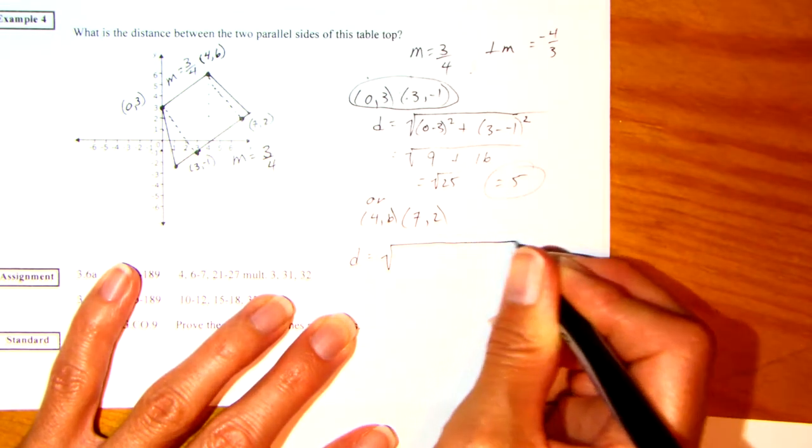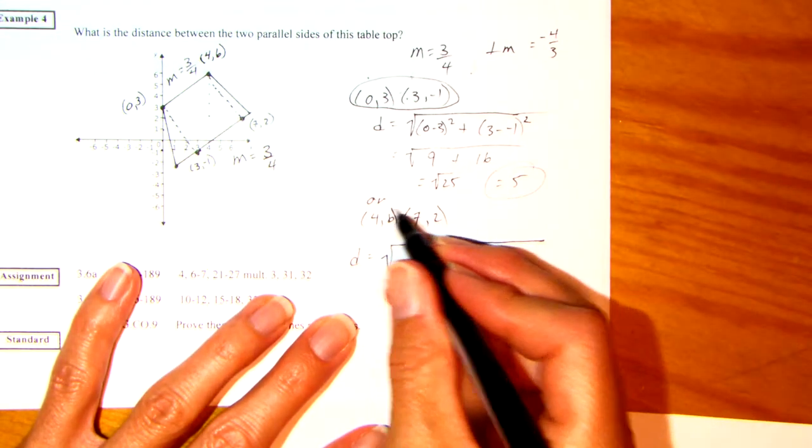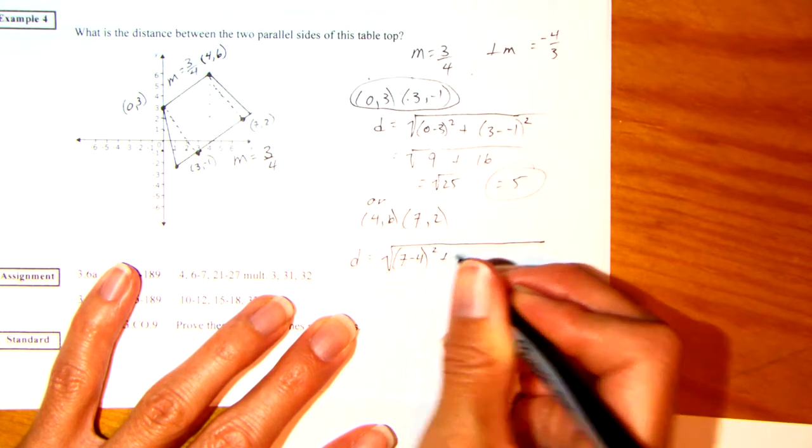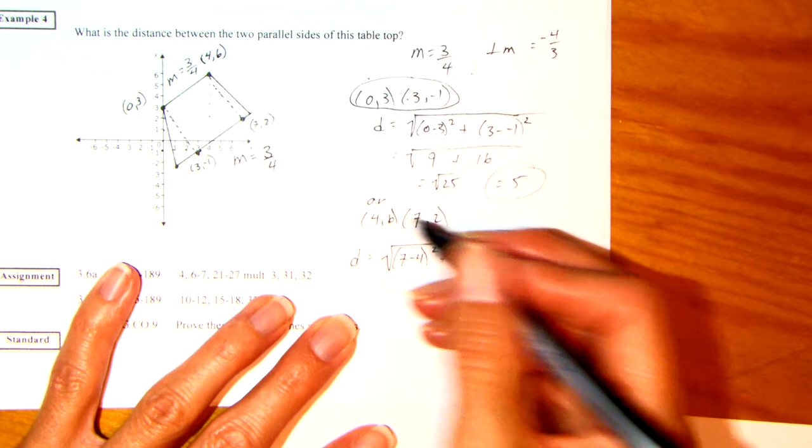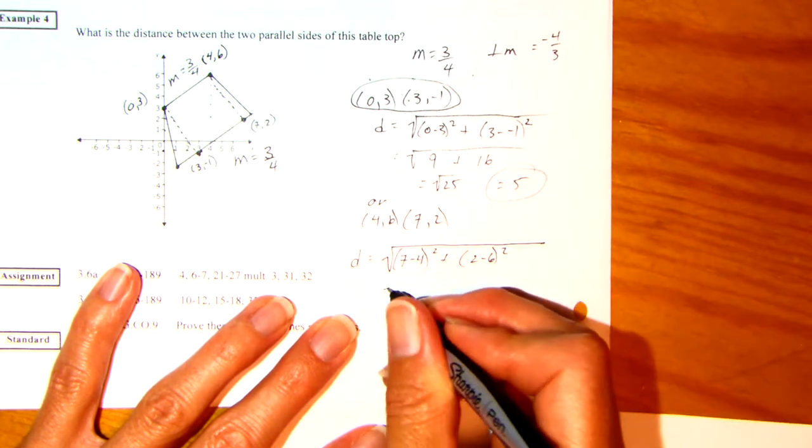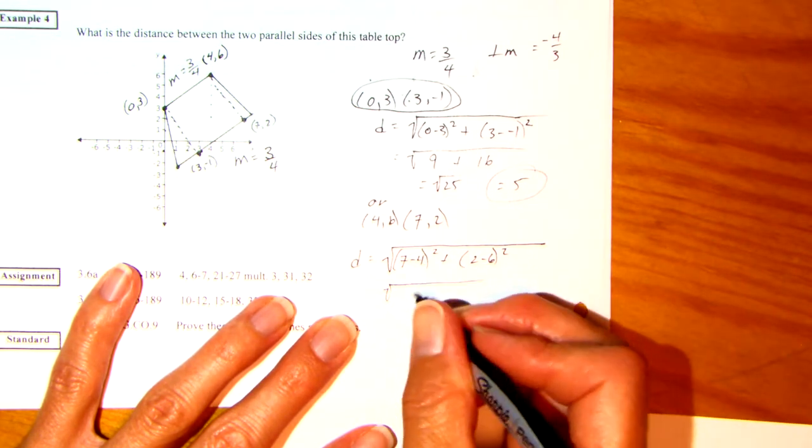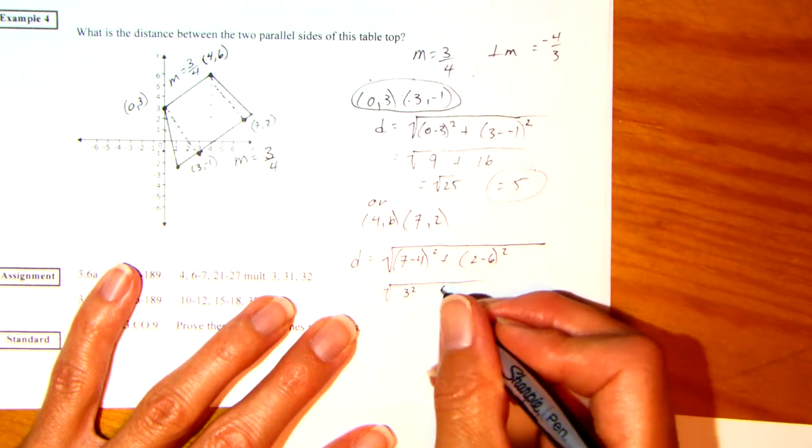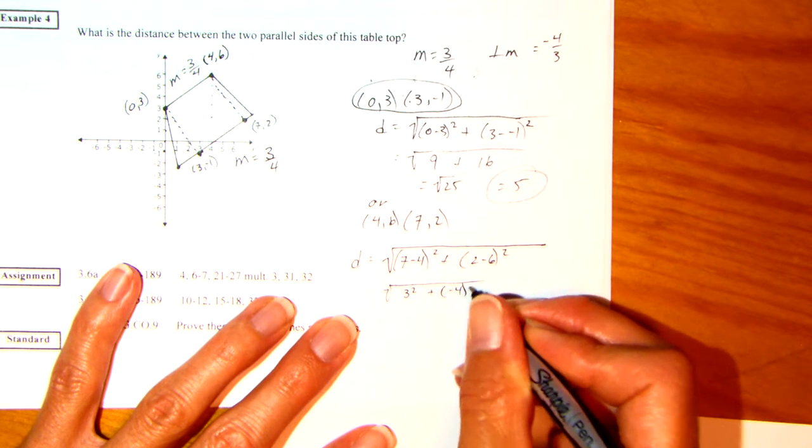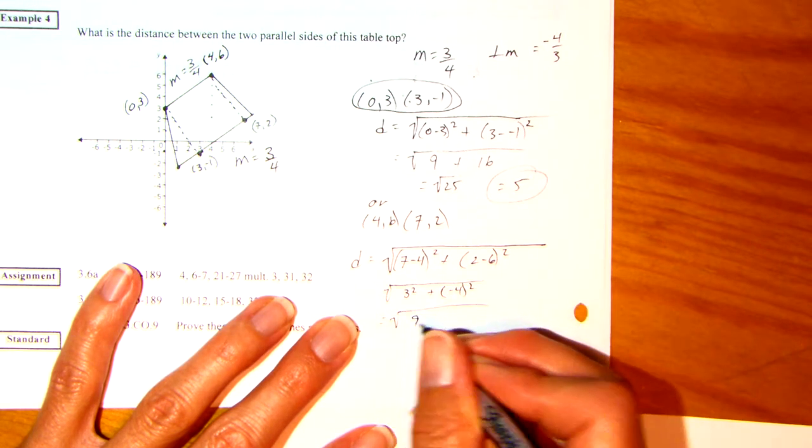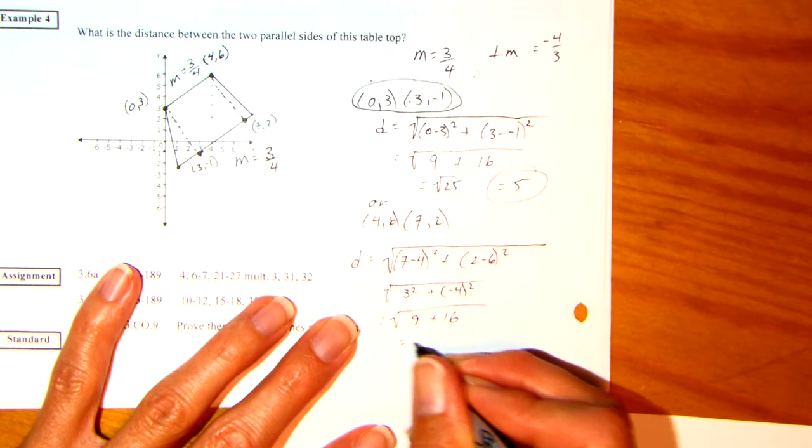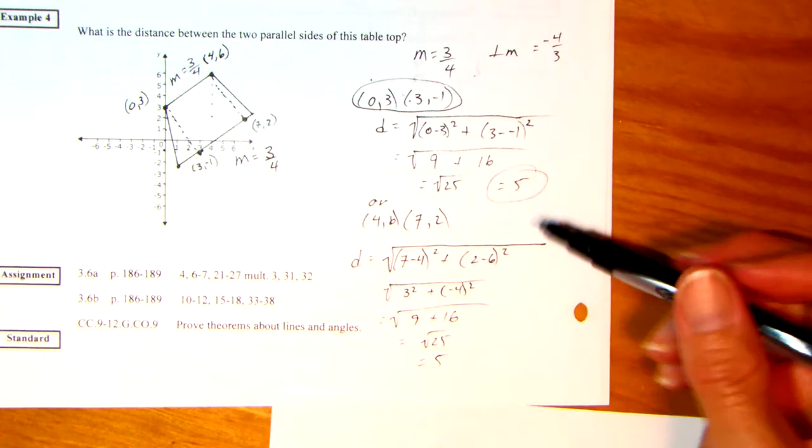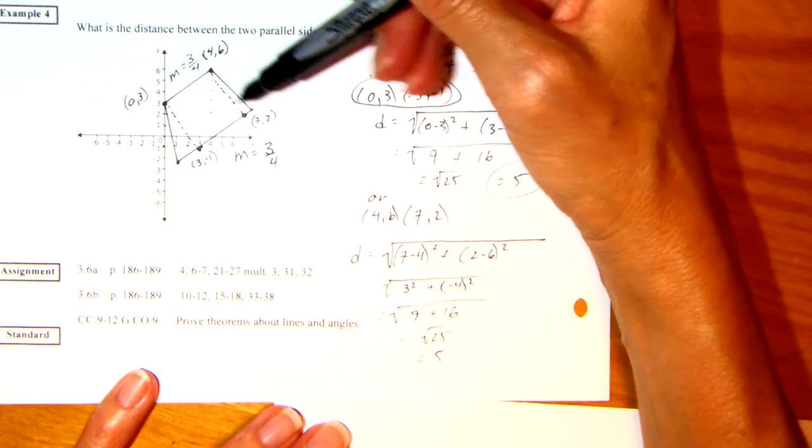Okay, so distance equals change of x's, 7 minus 4, quantity squared, plus the change of y's, 2 minus 6, quantity squared. So 7 minus 4 is 3. We want to square that. 2 minus 6 is negative 4. We want to square that. So we have 9 plus 16, which is the square root of 25, which is equal to 5. They have the same distance. That would be the shortest distance between those two parallel lines.